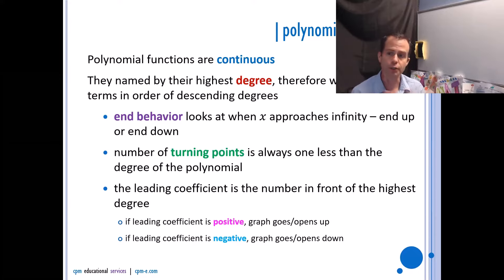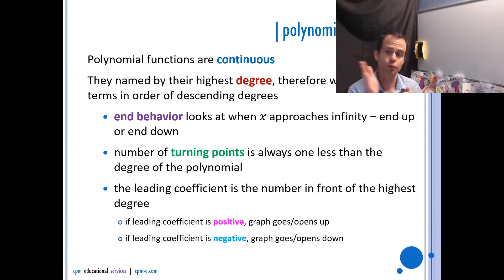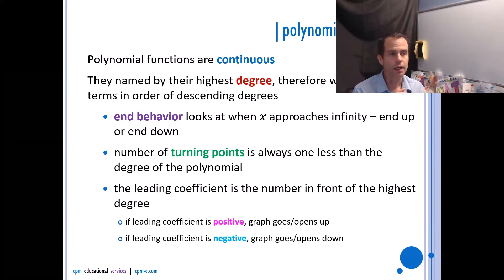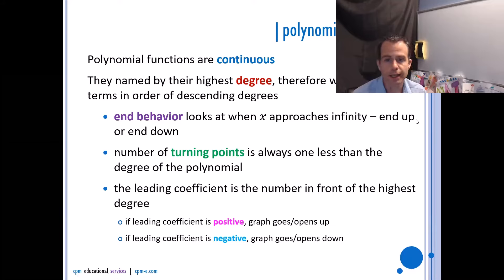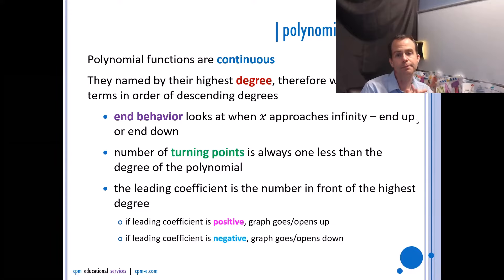Some teachers have taught a more calculus way of talking about end behavior, where you say as x approaches positive infinity y does this, and as x approaches negative infinity y does this. For purposes of your diploma, we're looking to see whether you end up or down, and we get that from the leading coefficient. The number of turning points will always be one less than the degree of the polynomial, so a degree eight will have seven turning points.